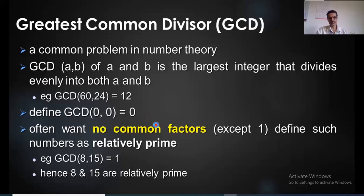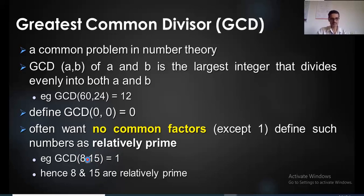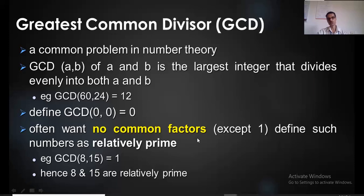Often we work with relatively prime numbers. We call numbers relatively prime if they have no common factors except 1. For example, the GCD of 8 and 15 is equal to 1. That means no number other than 1 divides both 8 and 15. These two numbers are called relatively prime numbers, and the GCD of co-prime or relatively prime numbers is always equal to 1.